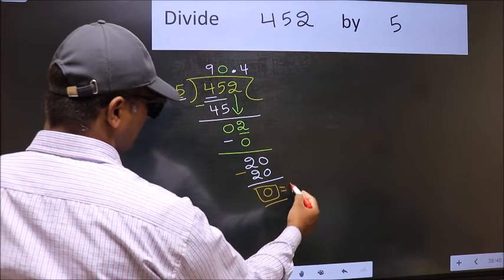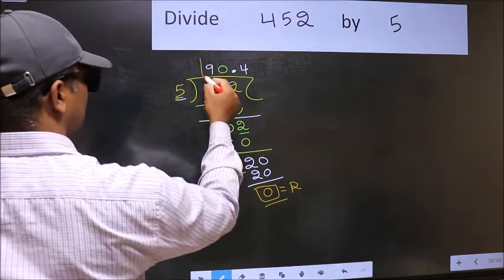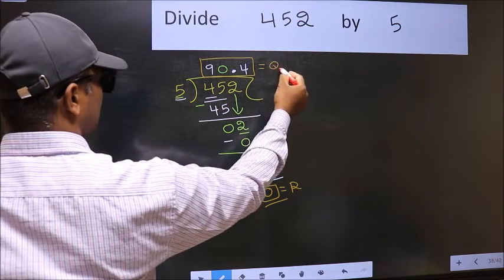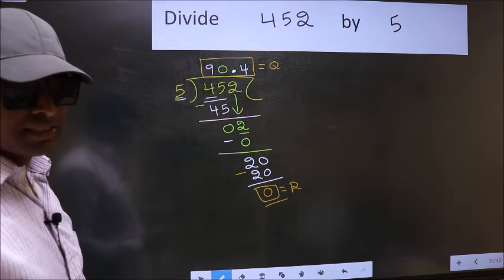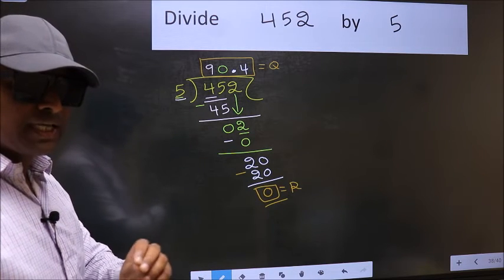So this is our remainder. And this is our quotient. Did you understand where the mistake happens? You should not do that mistake.